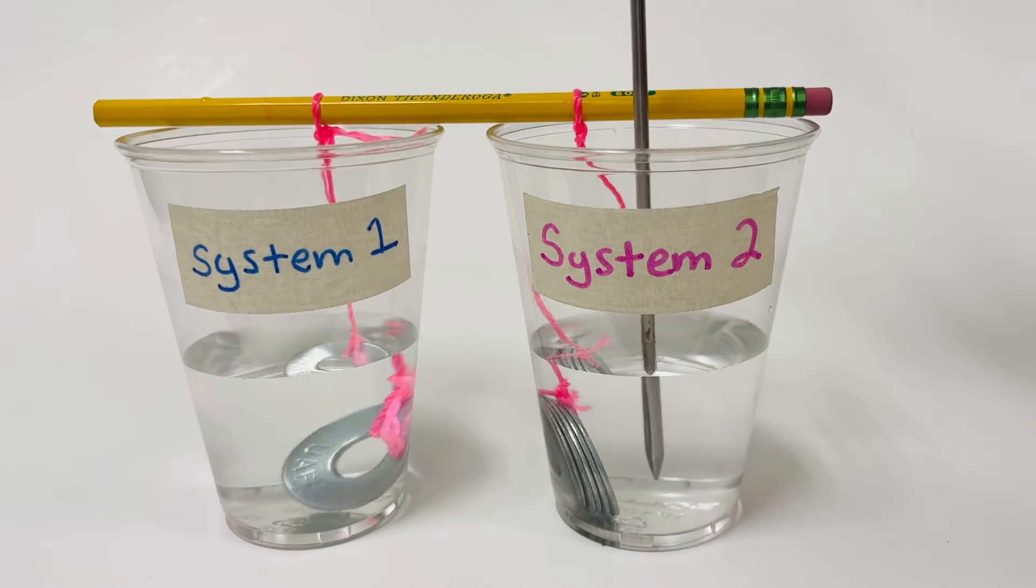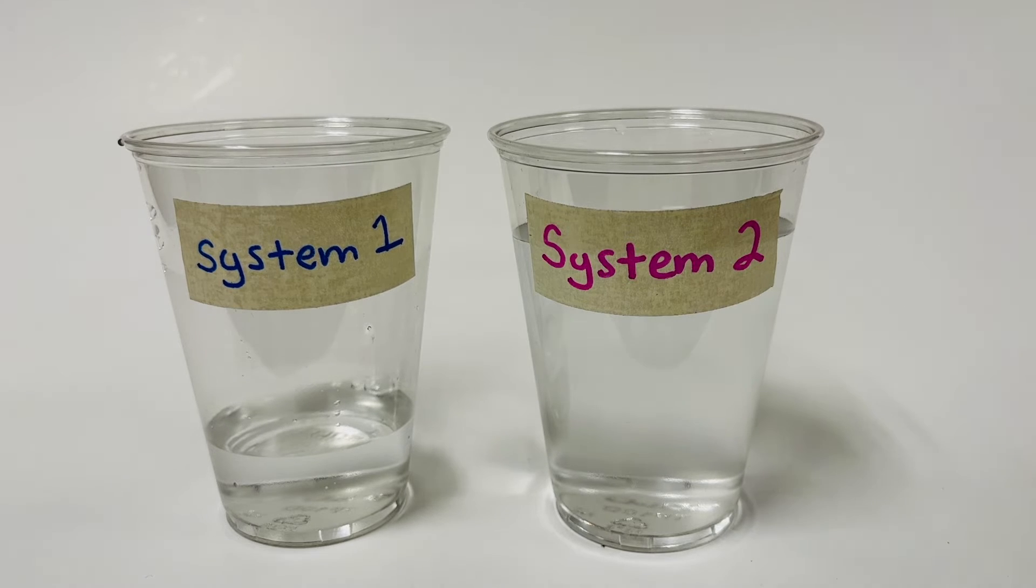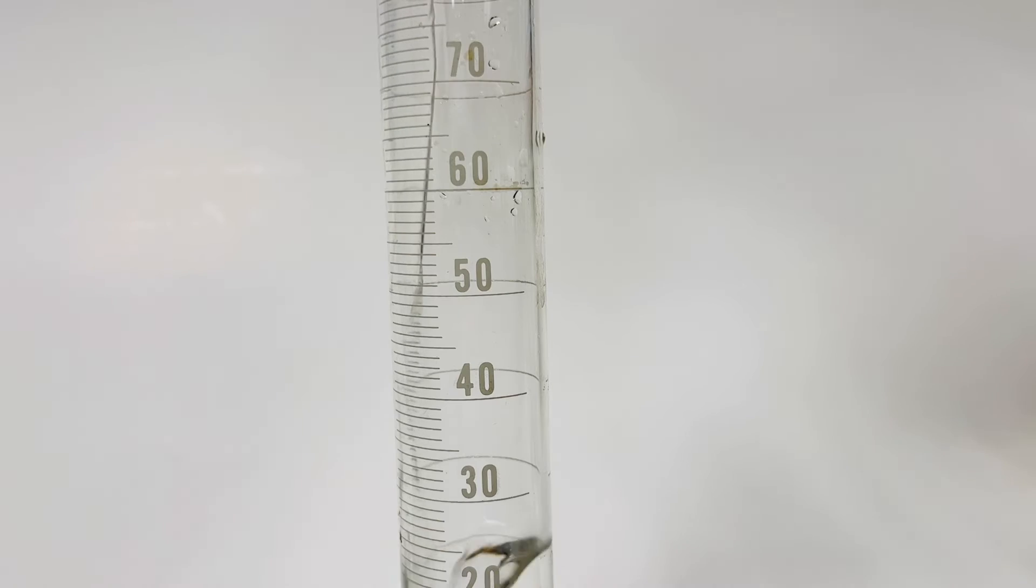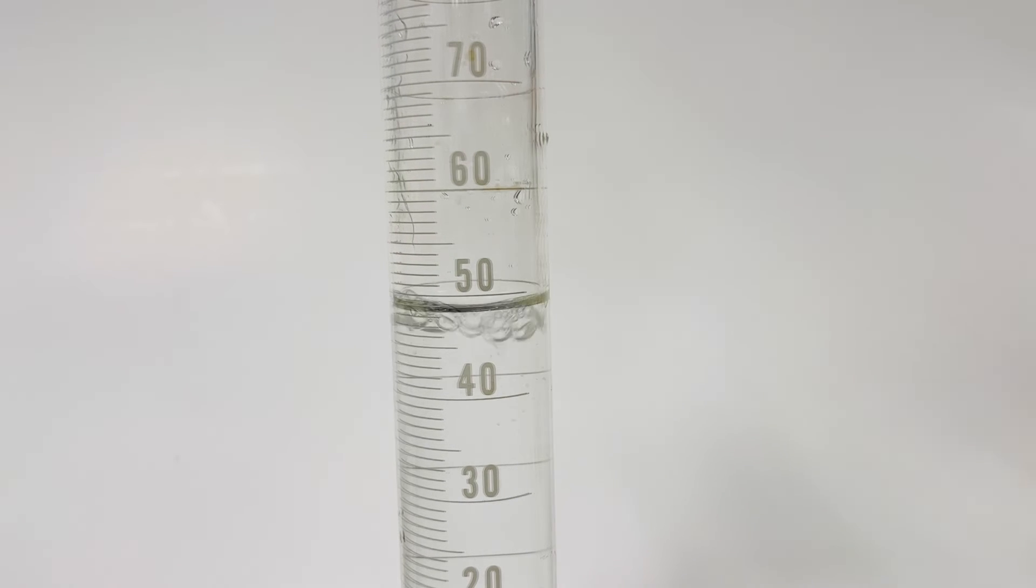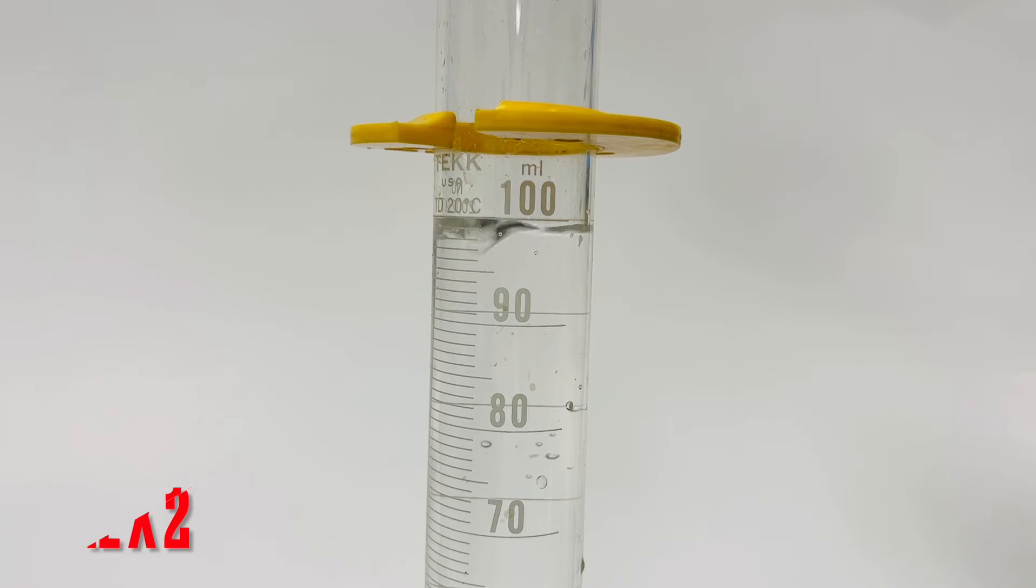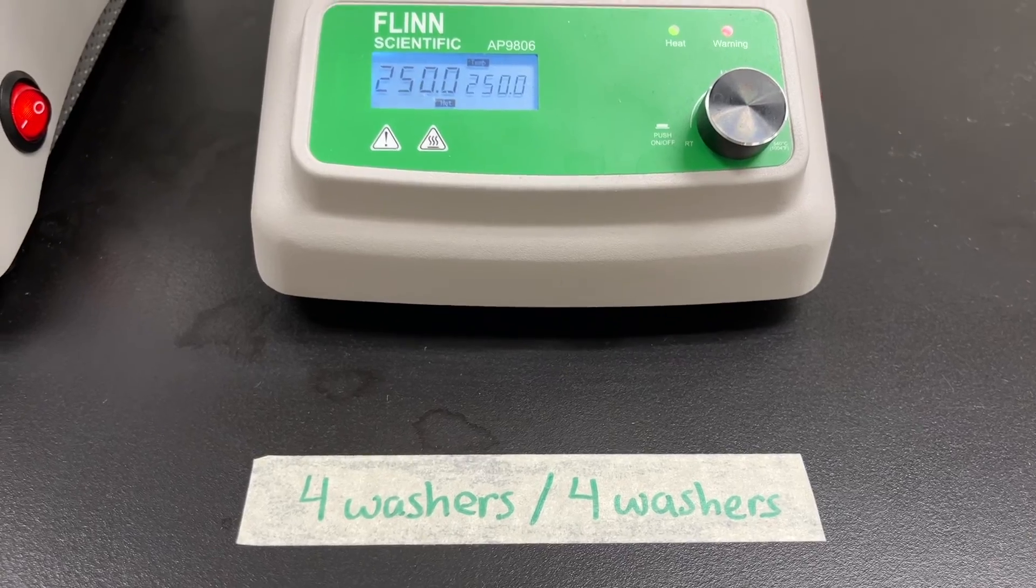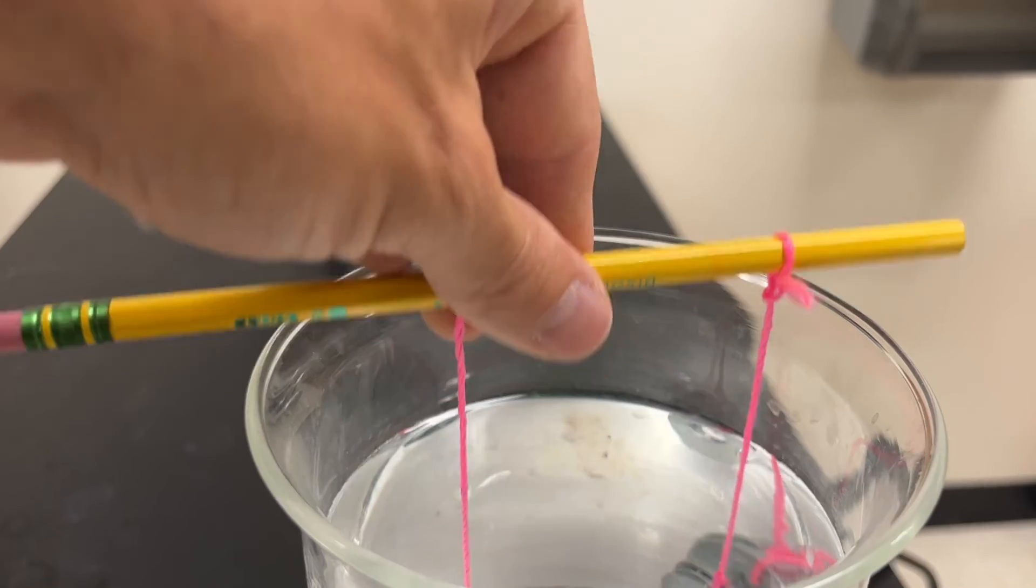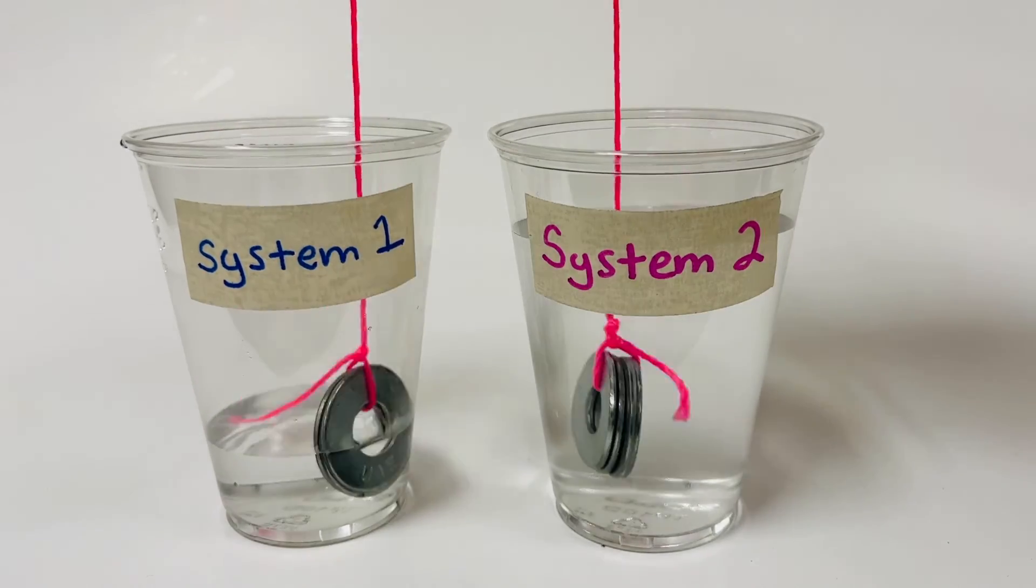For the second experiment we're going to use different amounts of water but the same number of washers to see how the temperature changes. We'll fill system one with 50 milliliters of water and system two with 200 milliliters of water. Just like before, record the initial temperature of the water, then take the set of four washers and place them each in the two different systems.